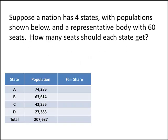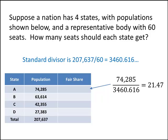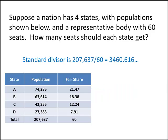Let's do the same example using this new method and make sure we get the same answers as before. The standard divisor is the total population of the nation — in this case 207,637 — divided by the 60 seats we have, which gives us 3,460.616. That means each representative represents approximately 3,460 people. For state A, we take state A's population, 74,285, and divide by the standard divisor, 3,460.616, and we get 21.47 — which is the same fair share as before. This just gives us a different way to compute the fair share. Do that for all the states, and once again it adds up to 60.